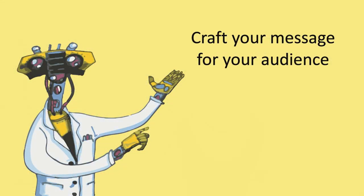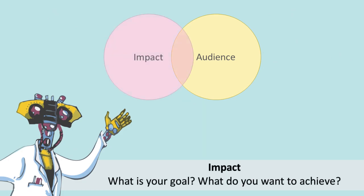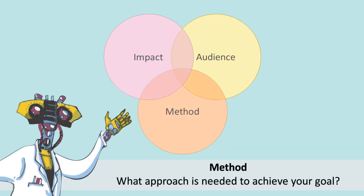If you want to be efficient at driving impact in society, you have to think about three things: first, who am I talking to and what do they want — you have to understand the culture of your audience; second, what is my goal and what do I want to achieve; and third, once you have those two pieces of information, what is the most optimal method to reach my goal. Good luck.